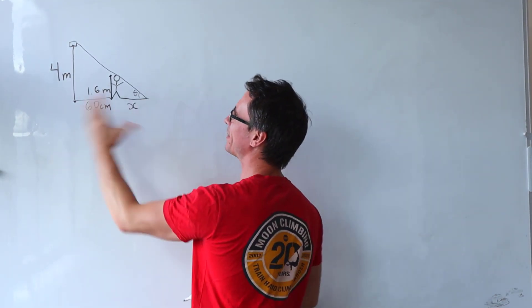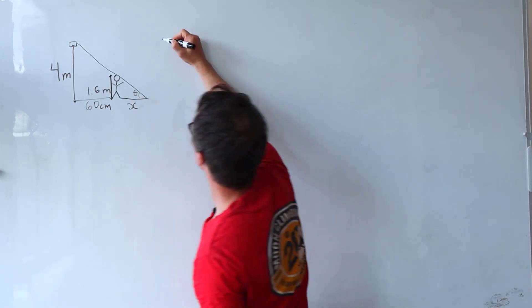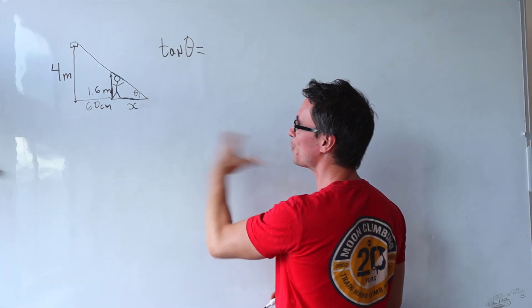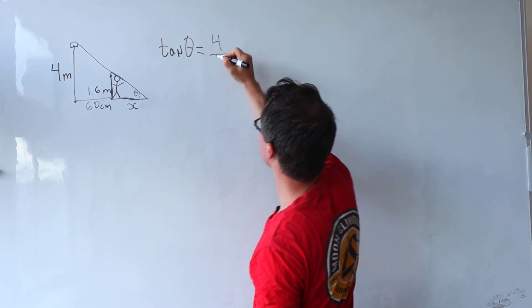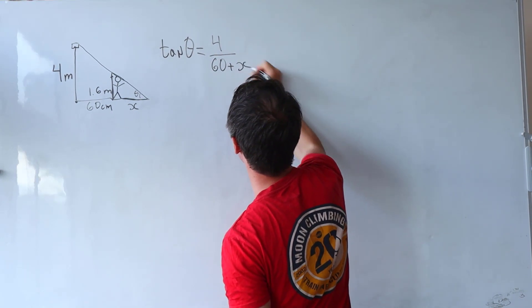Look at this triangle, we have the opposite, we have the adjacent, so tan of theta will be equal to the opposite which is just 4, and then we're gonna be dividing that by 60 plus x.